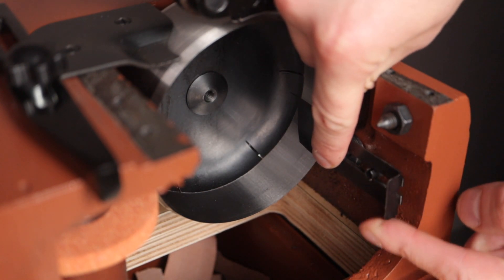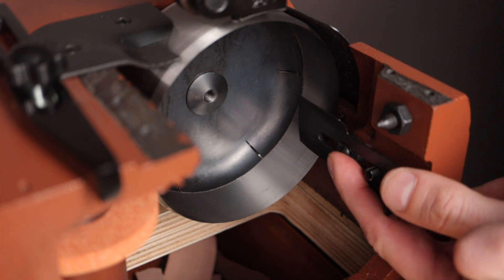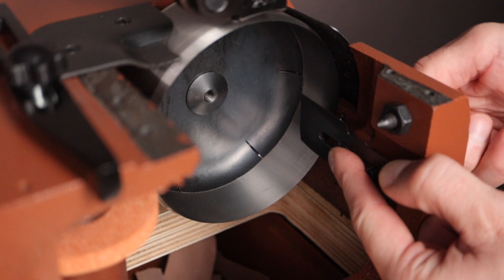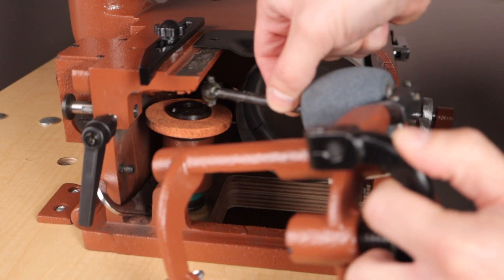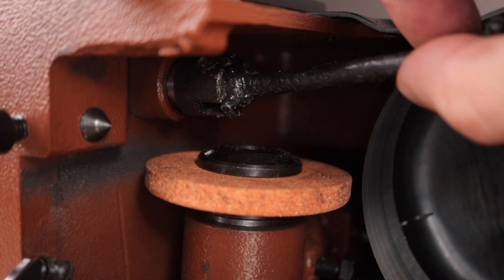Now carefully insert the roller bracket arm back into place and line all the pins back up and push them into place.